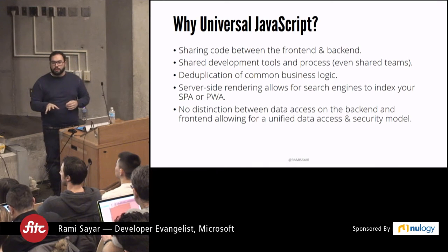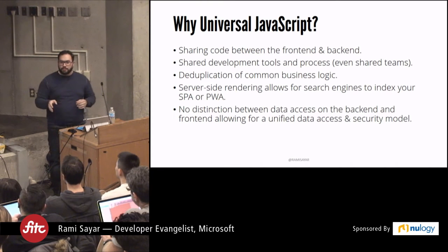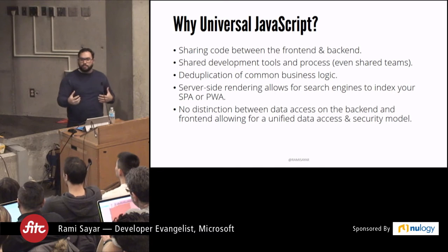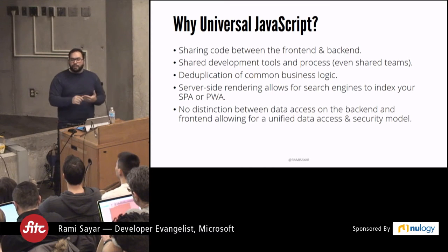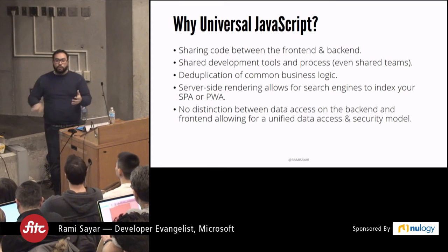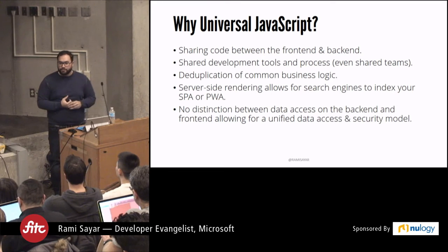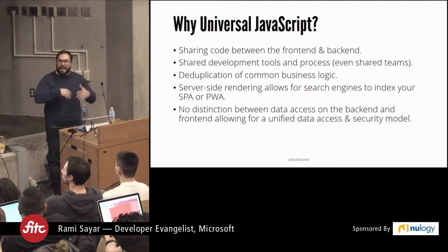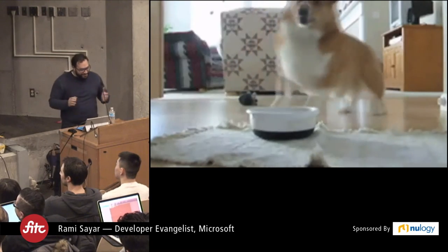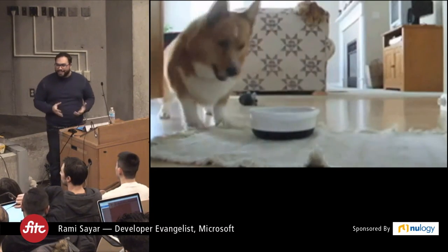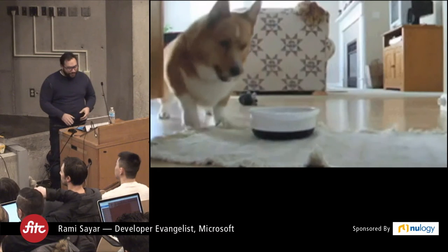What I find very interesting about universal JavaScript is that it forces us to have a strict data access policy. We tend to take shortcuts on the back end because we can connect directly to the database, but by forcing the same code on both sides, we have to rethink what it means to do a SQL query. Should we instead be calling a REST API on the back end, just as we would on the front end? That's why universal JavaScript is a trend that's picking up — very few folks have functioning stacks like this. Let's dive into it.